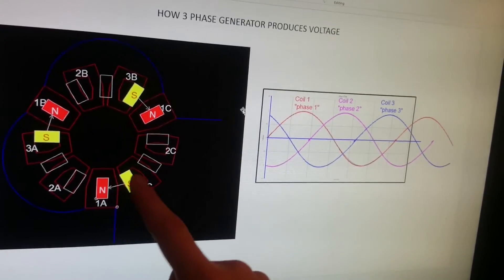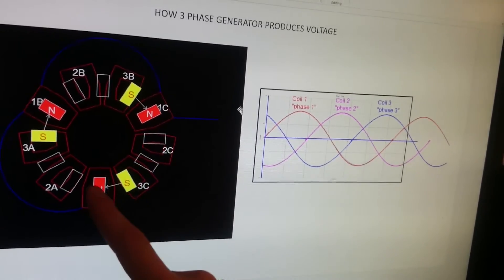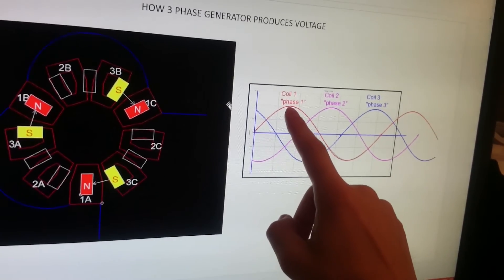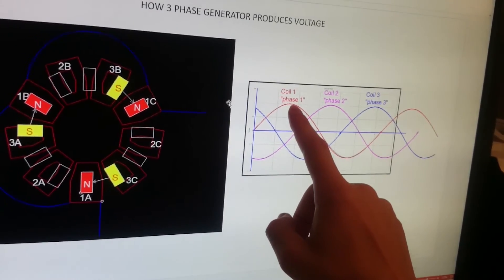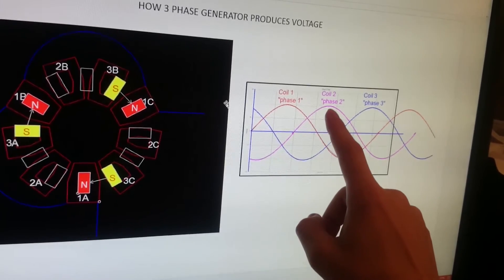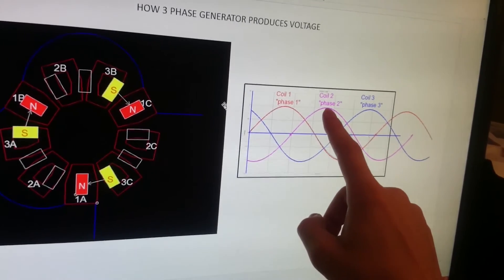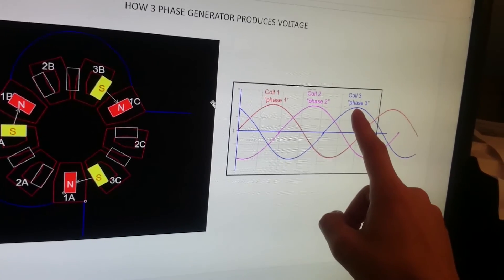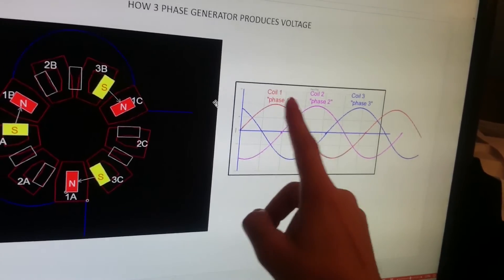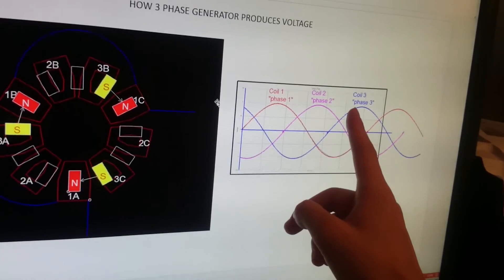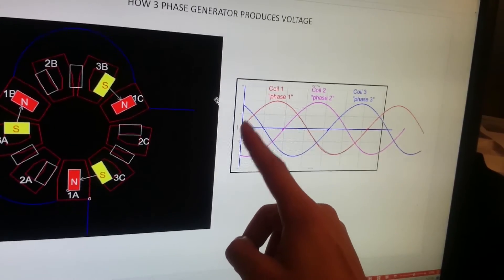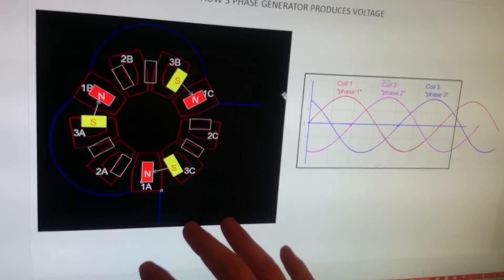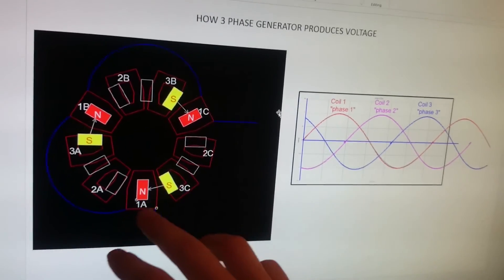When coil 1 has plus 24 volts, coil 2 will have it a few milliseconds later, and coil 3 a few milliseconds after that. This shift in time is all you need to know about the three-phase system.